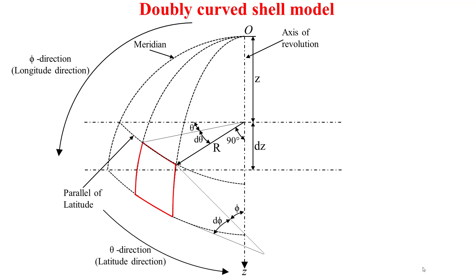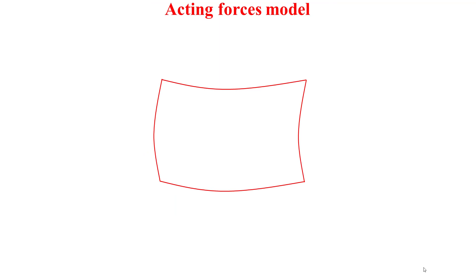The two principal curvatures of this infinitesimal doubly curved shell have radius R1 as the radius of the first principal curvature, and radius R2 as the radius of the second principal curvature, as depicted by the model in this slide. Now I'll talk about the acting forces model — our infinitesimal doubly curved shell has d theta and d phi as dimensions.